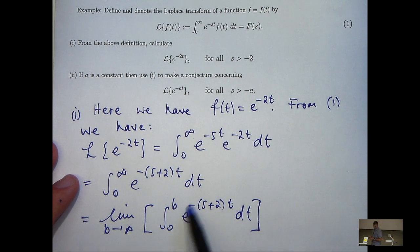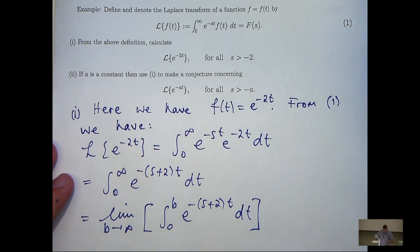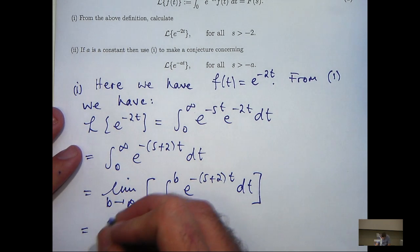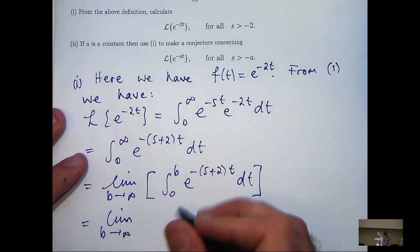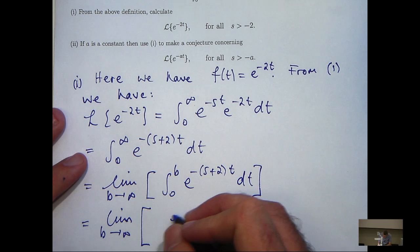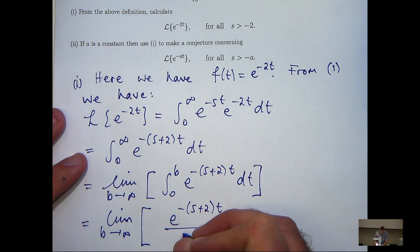Okay, so now I'm going to imagine s is constant here and integrate normally with respect to t. And the very last thing will involve taking this limit as b goes to infinity. Okay, so if I integrate here, I'm going to get something like the following.